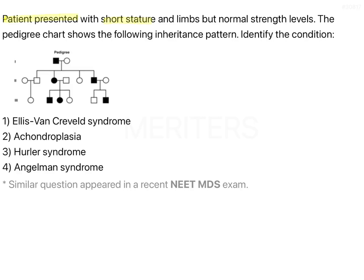A patient presented with short stature and short limbs but normal strength levels. The pedigree chart shows a specific inheritance pattern — identify the condition. The options are Ellis van Creveld syndrome, achondroplasia, Hurler syndrome, and Angelman syndrome. Ideally when this kind of question comes, our first attention goes to the pedigree chart and we forget the information in the question. The patient has short stature and short limbs but normal strength levels.